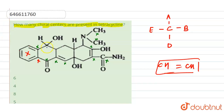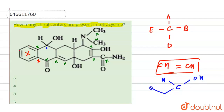Now let's look at this carbon. Here we have one H, here we have OH, on this side we have a double chain going on, and here we have a single bond. These are all different substituents, so this one is our first chiral carbon.